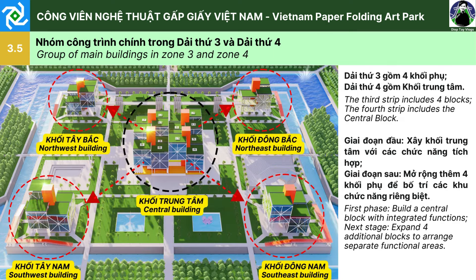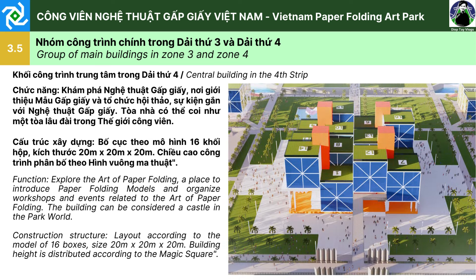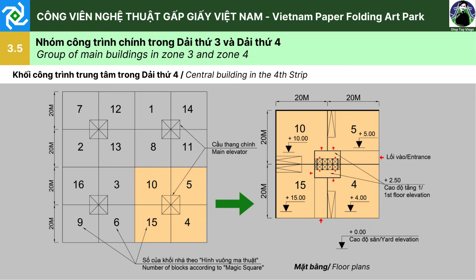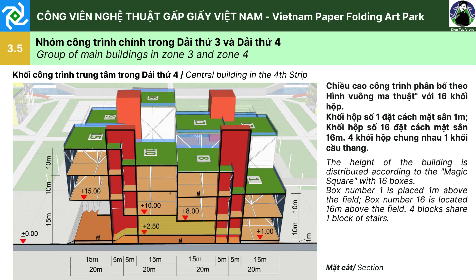3.5. Nhóm công trình chính trong giải thứ 3 và giải thứ 4. Giải thứ 3 gồm 4 khối phụ, giải thứ 4 gồm có khối trung tâm. Giai đoạn đầu là khối trung tâm và các chức năng tích hợp; giai đoạn sau mở rộng thêm 4 khối phụ để bố trí các khối chức năng riêng biệt. Khối công trình trung tâm có chức năng khám phá nghệ thuật gấp giấy, nơi giới thiệu mẫu gấp giấy và tổ chức hội thảo, sự kiện gắn với nghệ thuật gấp giấy. Toà nhà có thể coi như một toà lâu đài trong thế giới công viên. Cấu trúc xây dựng gồm 16 khối hộp kích thước 20x20x20m, chiều cao của công trình phân bố theo hình vuông ma thuật. Khối hộp số 1 đặt cách mặt sân là 1m, khối hộp số 16 đặt cách mặt sân là 16m, 4 khối hộp chung nhau 1 cầu thang.